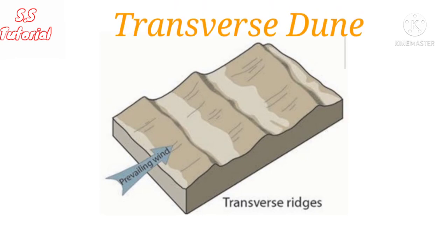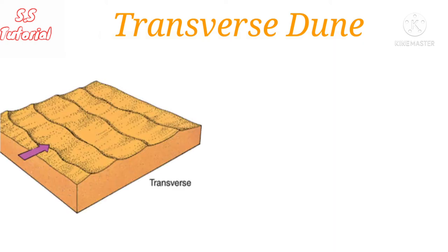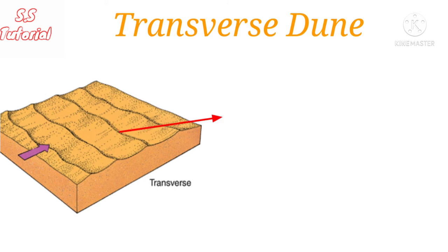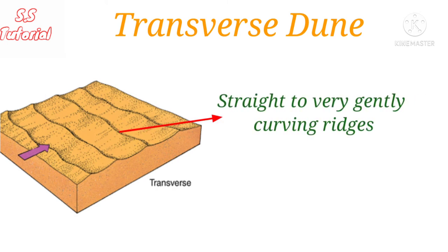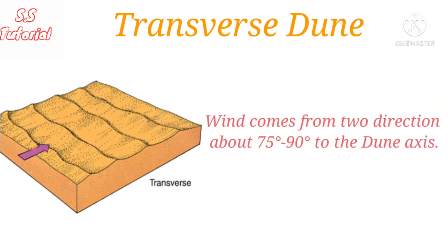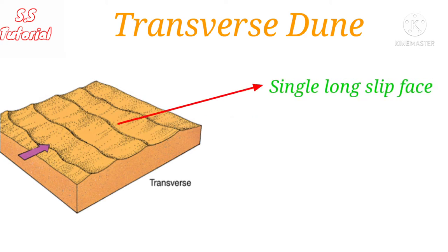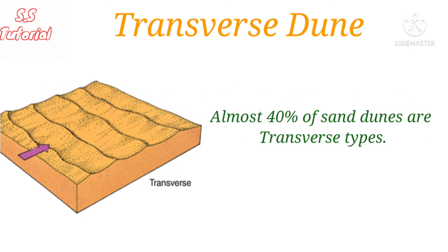Transverse dune: When dunes are aligned perpendicular to the prevailing wind, they are called transverse dunes. They occur where there is a plentiful supply of sand and may form straight to very gently curving ridges. The wind that forms transverse dunes comes from two directions, generally 75 to 90 degrees to the dune axis. They have a single long slip face. Approximately 40% of sand dunes worldwide are transverse dunes.